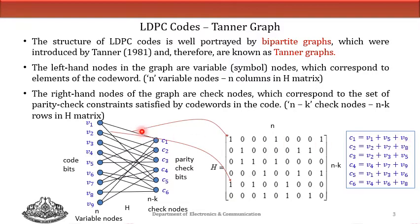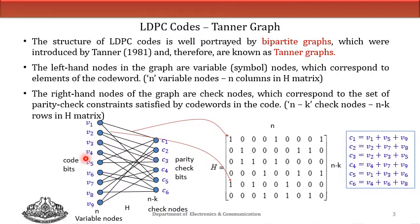The left nodes are the code word bits, which we call variable nodes, and the right-side nodes are the n minus k parity check bits, which we call check nodes. From the first equation, c1 equals v1 plus v5 plus v9, so draw a line from v1 to c1, from v5 to c1, and from v9 to c1. Similarly, for c2 equal to v2 plus v7 plus v8, draw lines from v2, v7, and v8 towards c2. For c3 equal to v2 plus v3 plus v5, draw lines from v2, v3, and v5 towards c3. In this manner, you complete the whole Tanner graph.